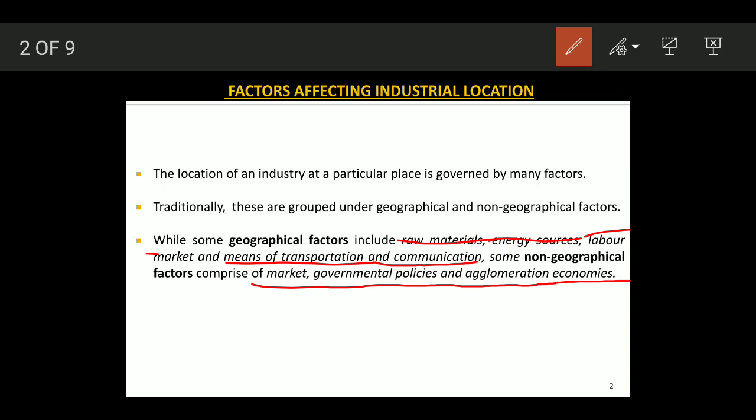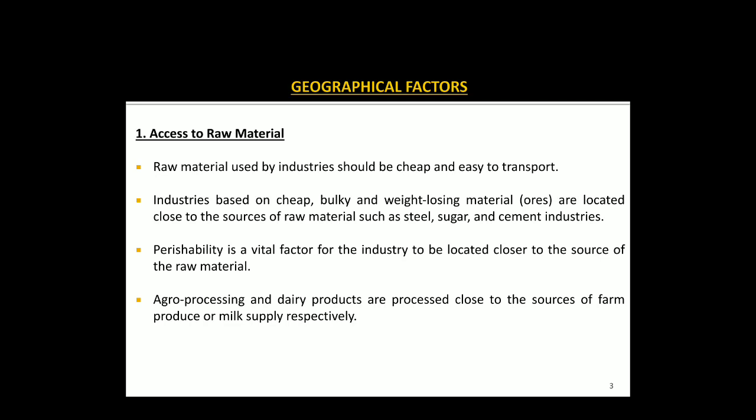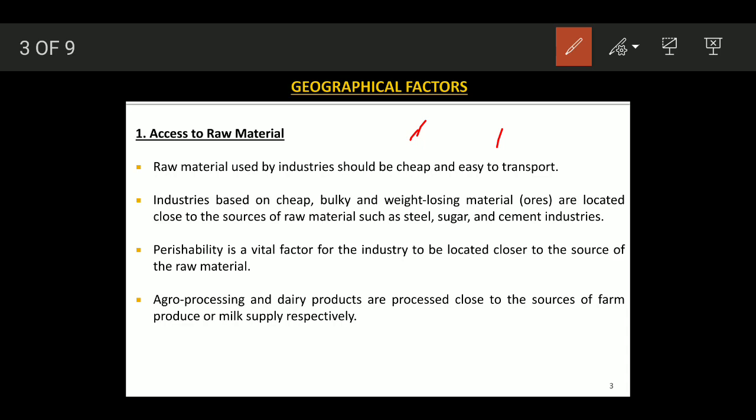The first geographical factor is access to raw materials. Raw materials used in industries should be cheap and easy to transport. Industries based on cheap, bulky, and weight-losing materials — for example, iron ore, bauxite, aluminum, nickel — tend to be located close to the sources of raw materials.